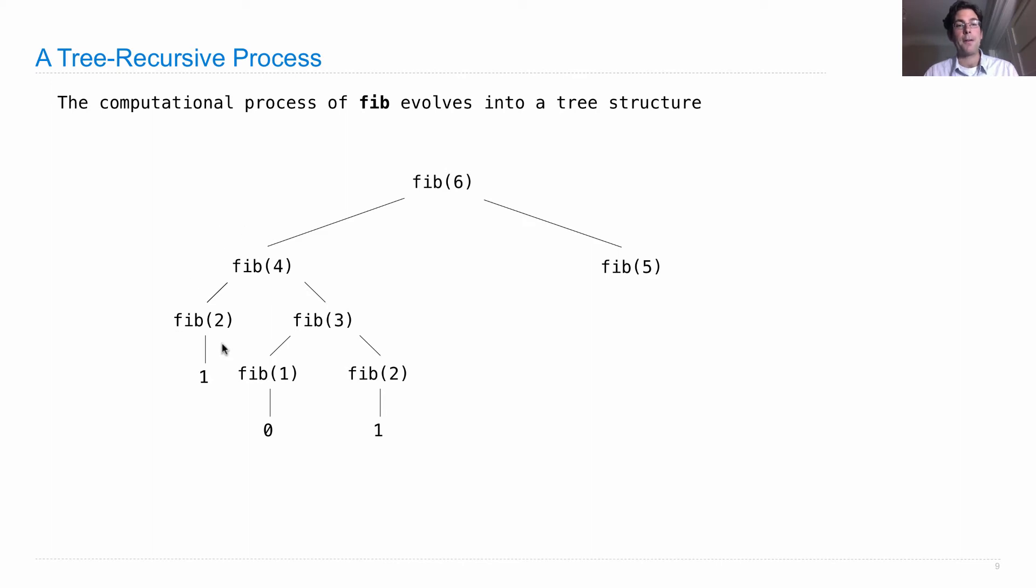That involves fib(2) and fib(3), and fib(3) involves fib(1) and fib(2). And those are all base cases. So in order to get the fact that fib(4) is 2, we're building this whole tree structure.